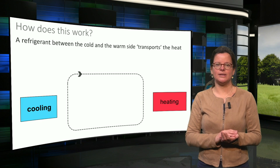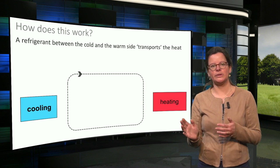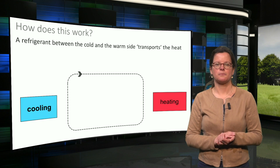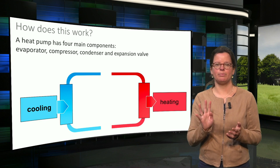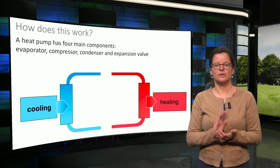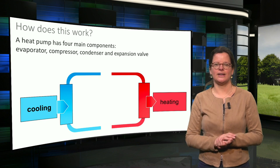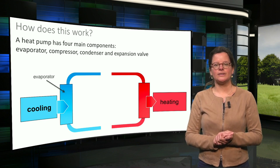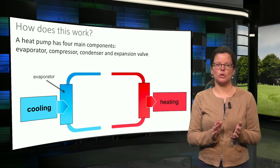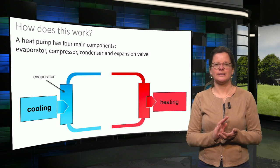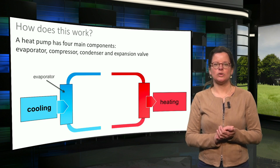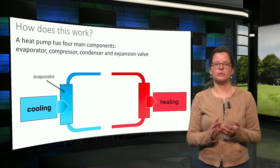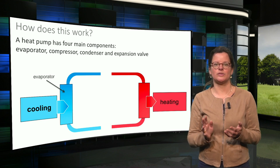The refrigerant or working medium undergoes a cycle from liquid phase to gas phase to liquid, and so on. To be able to transfer the heat from the cold to the warm side, a heat pump has four main components: evaporator, compressor, condenser, and expansion device. The evaporator is a heat exchanger where heat is transferred from the cold body to the refrigerant, meaning the refrigerant must be colder than the cold body, which means cooling of the cold side takes place. This heat exchanger at the cold side is called the evaporator as the working medium is converted from liquid phase to gas phase as a result of the heat transfer.